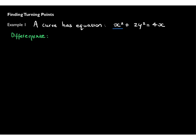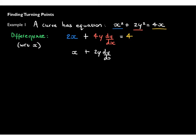Differentiating with respect to x: x squared differentiates to give 2x. Now, 2y squared has to be differentiated implicitly, giving 4y dy/dx. And 4x simply differentiates to 4. Dividing through all three parts by 2 gives x plus 2y dy/dx equals 2. Rearranging: dy/dx equals 2 minus x, all divided by 2y. Notice that the derivative is in terms of both x and y.